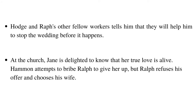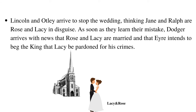George and Ralph's other fellow workers tell him that they will help him stop the wedding before it happens. At the church, Jane is delighted to know that her true love is alive. Hammond attempts to bribe Ralph to give her up, but Ralph refuses his offer and chooses his wife. Lincoln and Oatley arrive at the church to stop the wedding, thinking Jane and Ralph are Rose and Lacey in disguise. As soon as they learn their mistake, Hodge arrives at the church with the news that Rose and Lacey are married, and Simon Eyre intends to beg the king that Lacey be pardoned for his crimes.